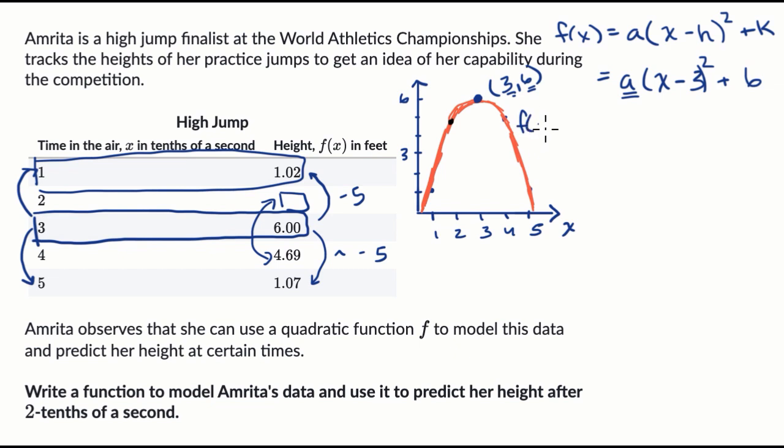So we could say that f of one, which is equal to 1.02, is equal to a times, well, f of one, when our function is at one, x is one. So one minus three squared plus six. And so we get 1.02 is equal to, one minus three is negative two. You square that, you get four. So 4a plus six.